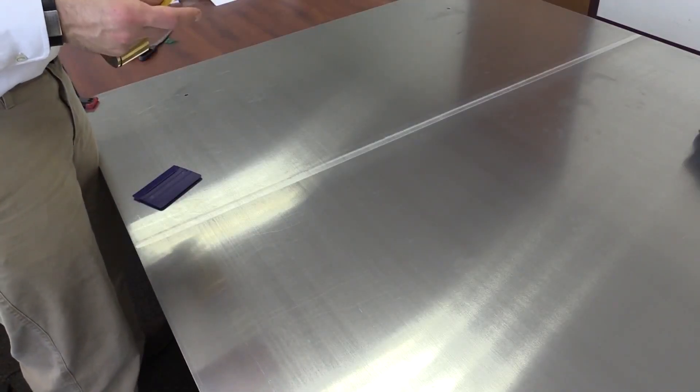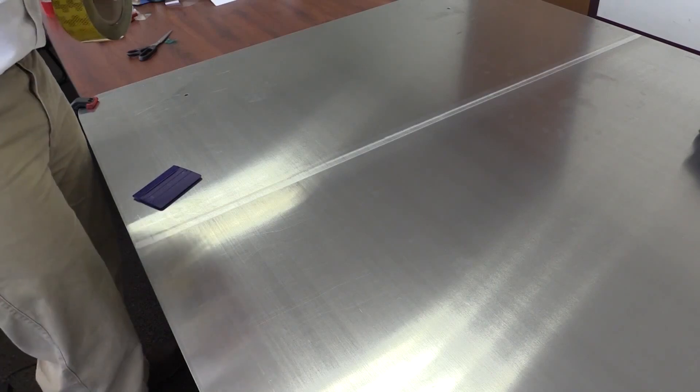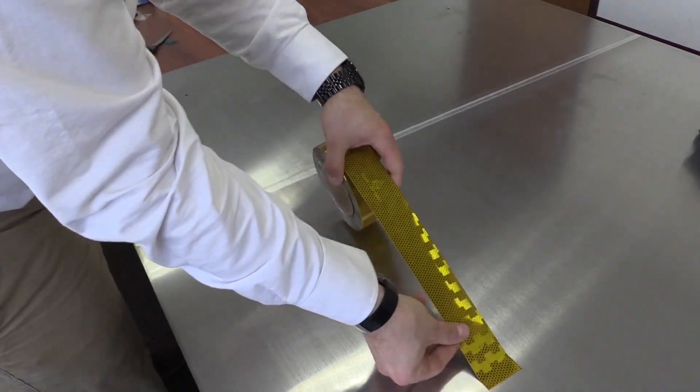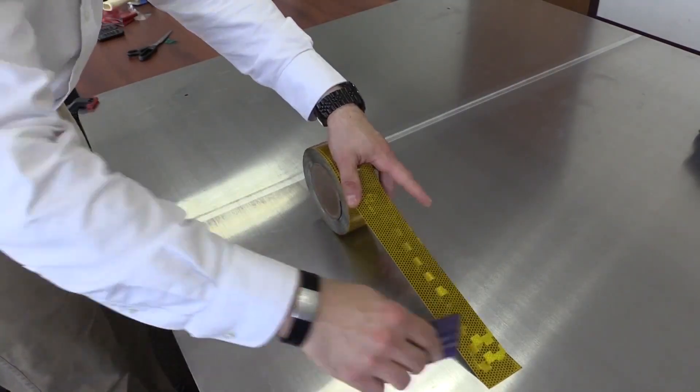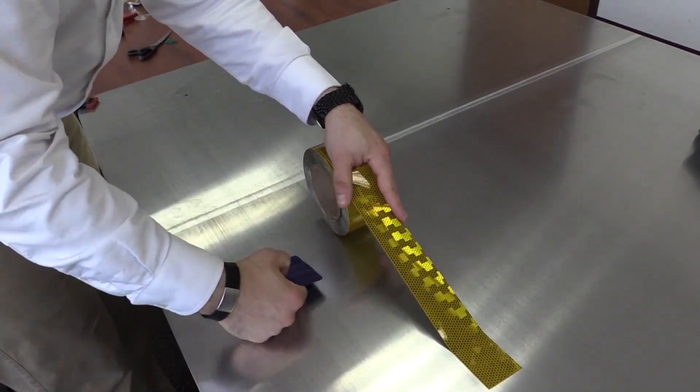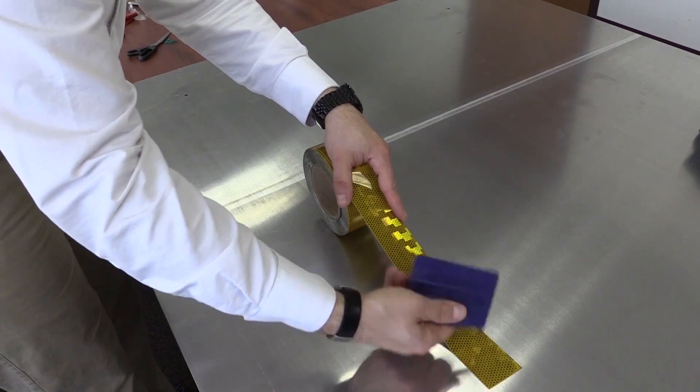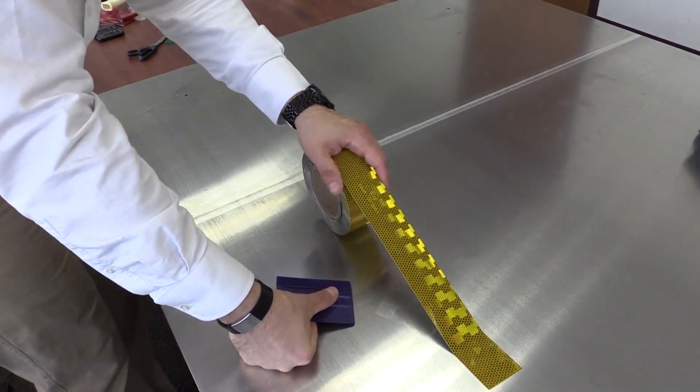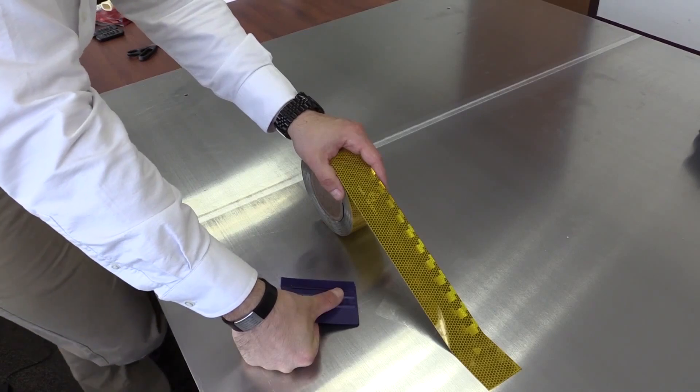Next we're going to walk through some simple tips you can use during the application process. I'm going to go ahead and start my tape. As you can see I'm just using my thumb to start it, and then I'll take my squeegee and start to press down. You'll notice I'm using a squeegee with a felt edge. You can also use a felt sleeve or low friction sleeve just to minimize scratching.